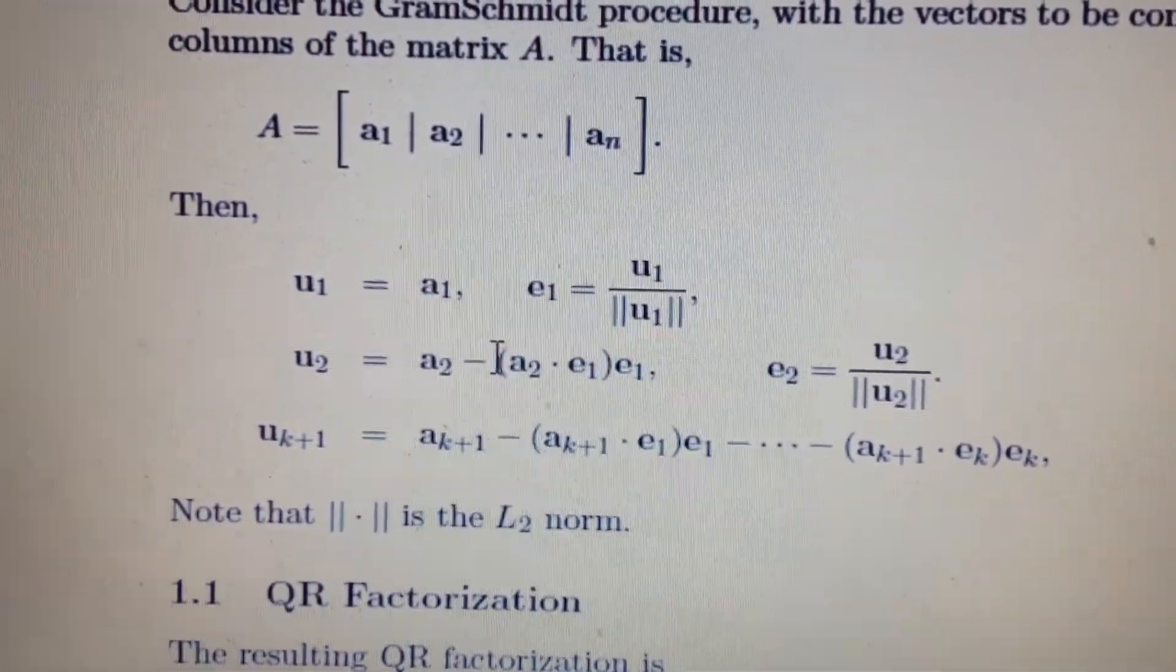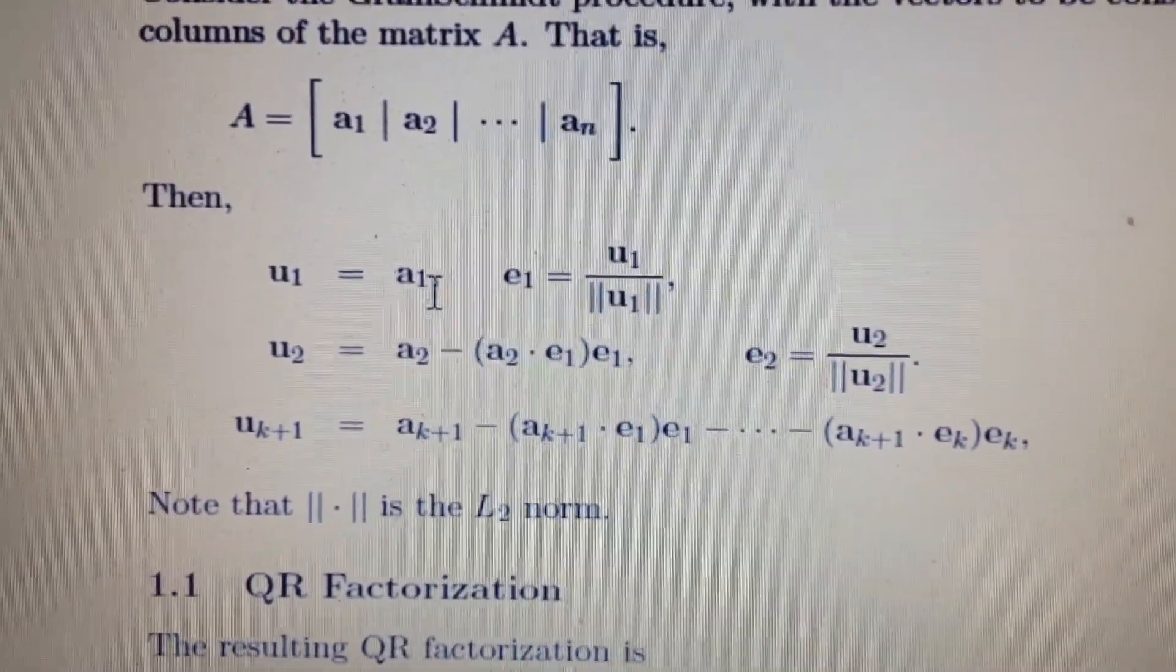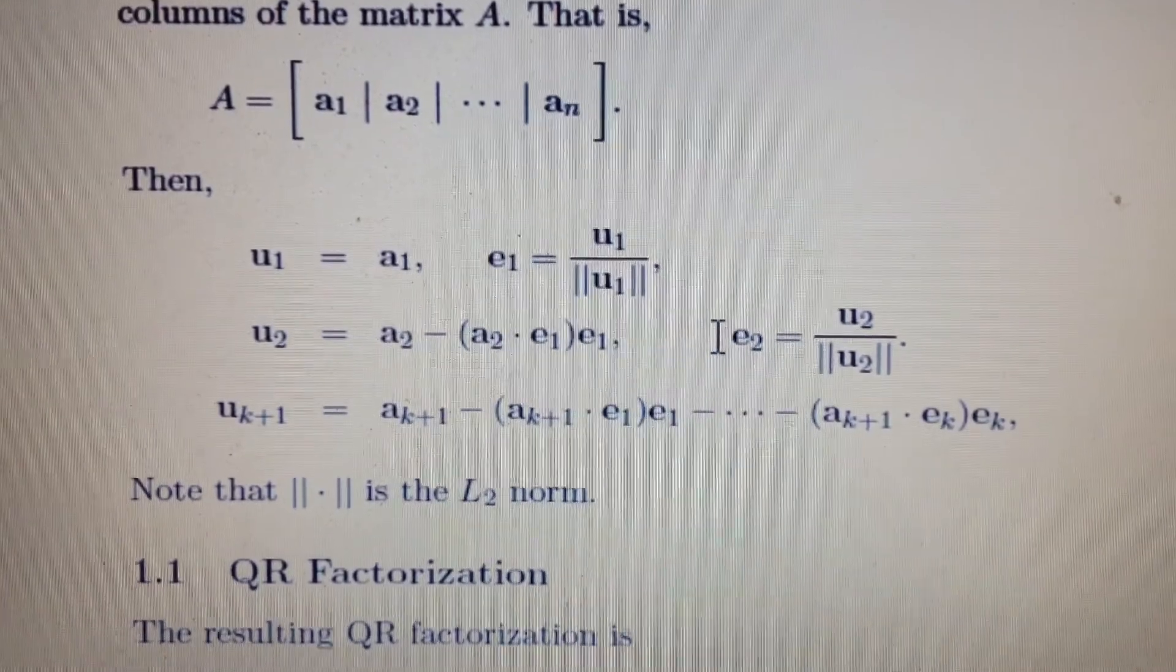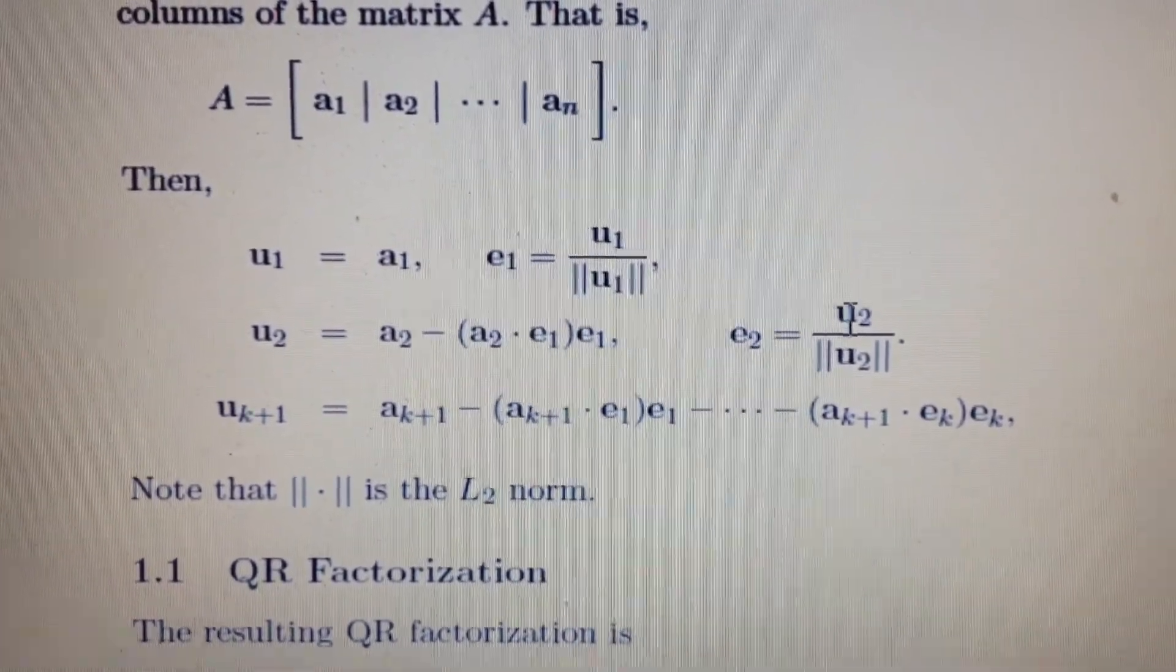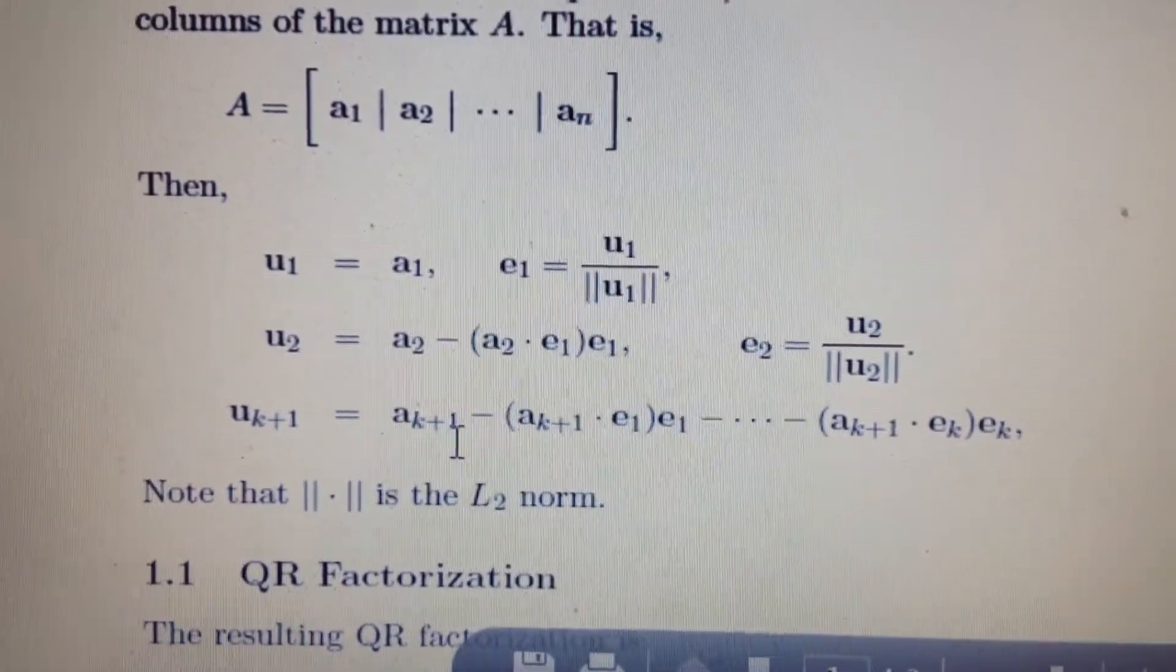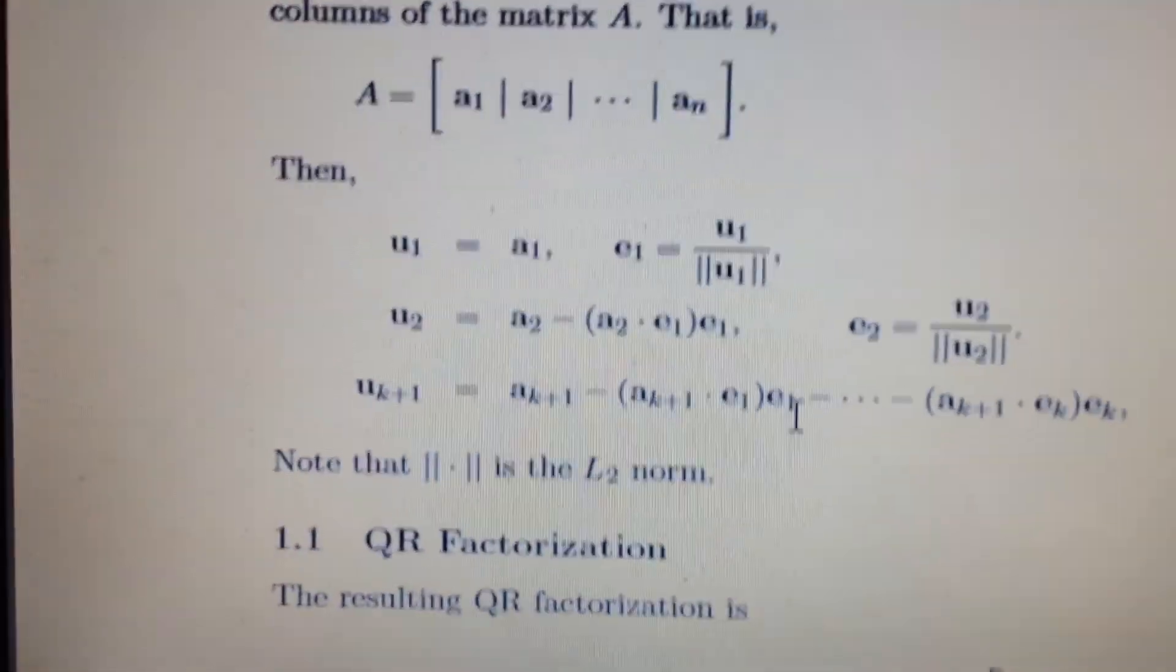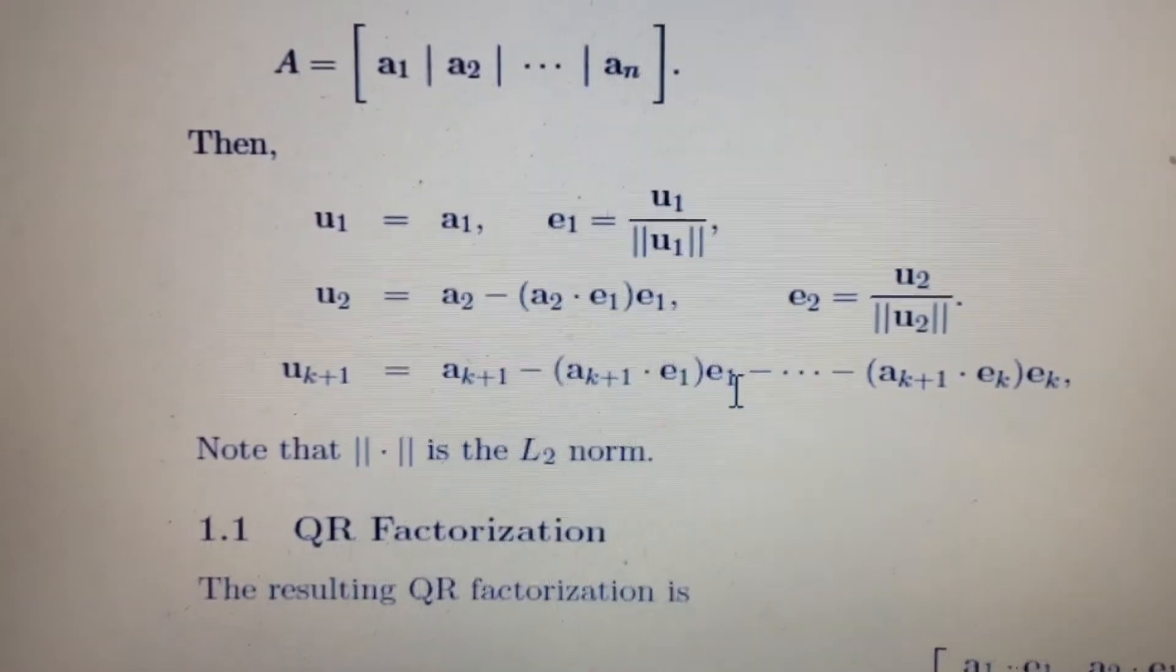We're basically subtracting off the component that is in the same direction as U1. E2 is U2 over the norm of U2, and so we keep getting components which are orthogonal, and soon we have a set of orthogonal vectors. We are basically taking away the dependencies.